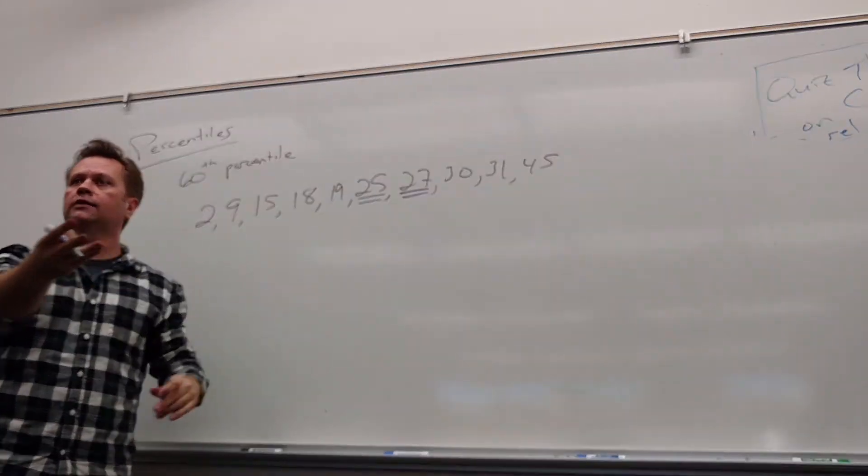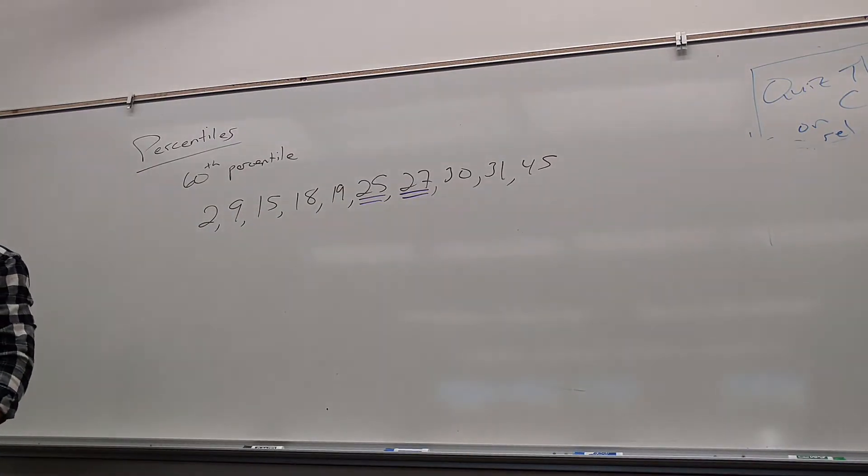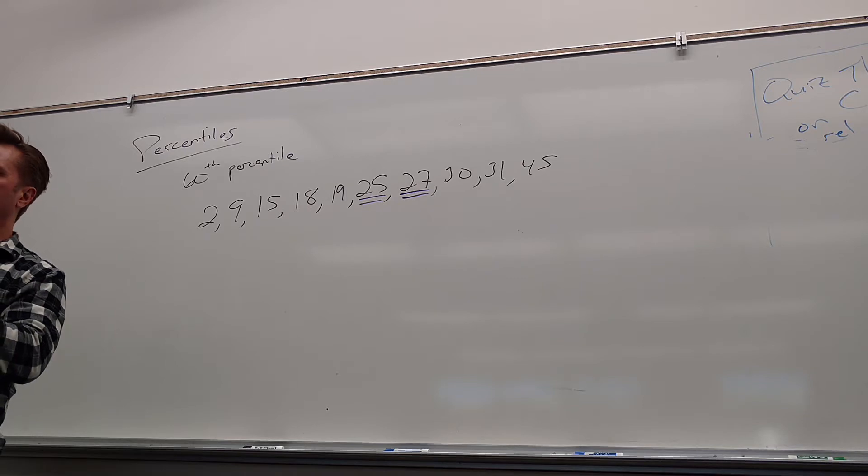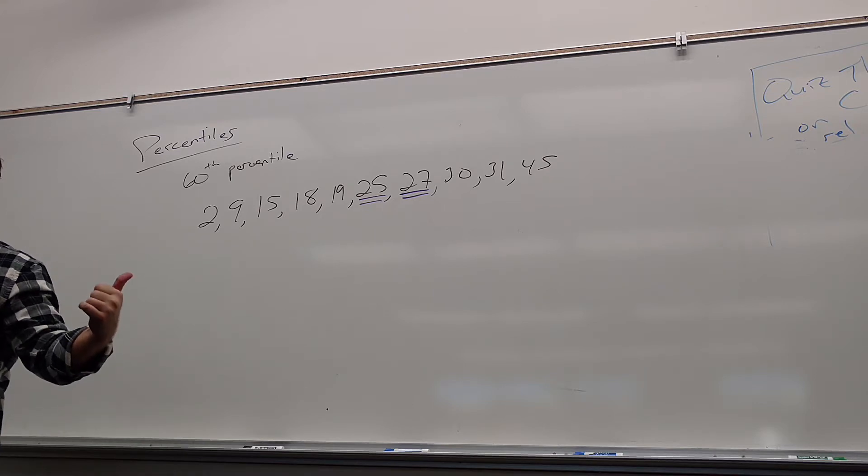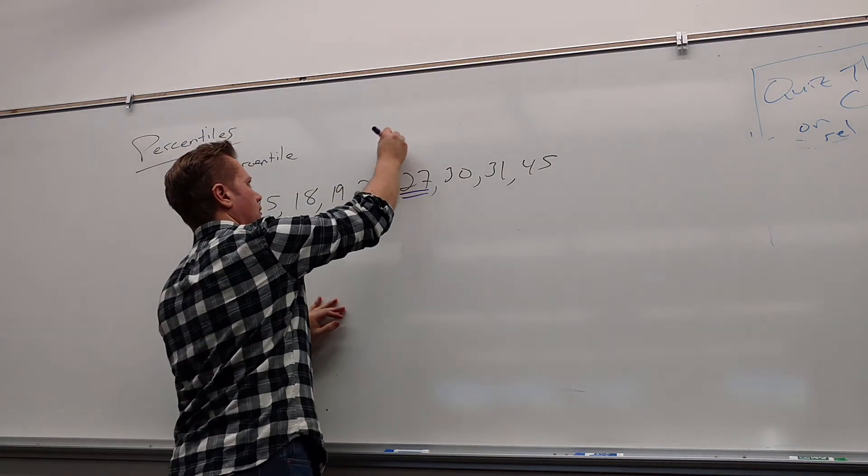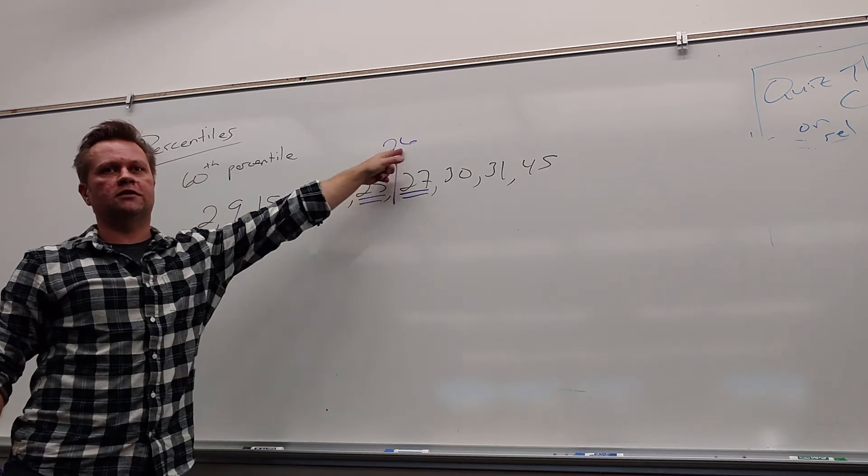Say again, sorry? So I have some people saying 27, right? 25. Some people saying 25? Now, the 27 people, or the people saying 27, why do you say 27? Anybody want to say it to me why? Yeah, because how many numbers are below 27? 6 out of 10 is 60%. Now, the 25 people, hopefully you didn't just count wrong.